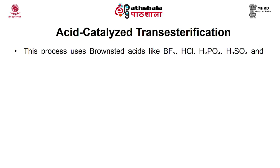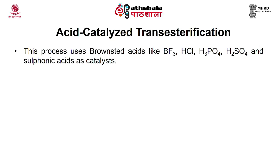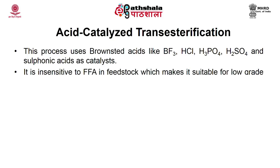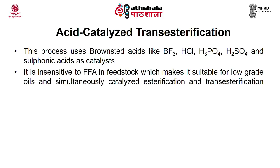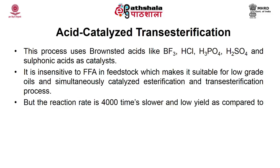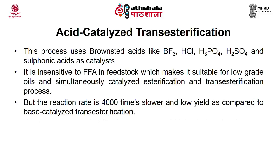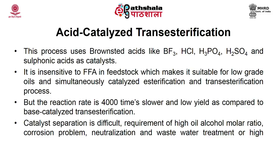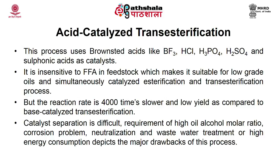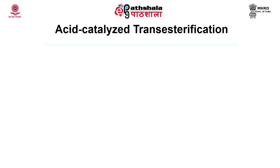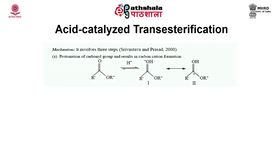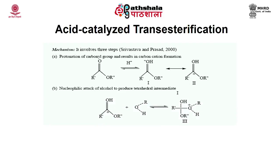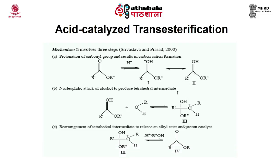Acid catalyzed transesterification uses acids like HCl, H₂SO₄, sulfonic acids, and phosphoric acids. It is insensitive to free fatty acids in the feedstock, making it suitable for low-grade oils and can simultaneously catalyze esterification and transesterification. However, the reaction rate is 4000 times slower and yields are lower compared to base catalyzed transesterification. Other drawbacks include difficulty in catalyst separation, requirement of high oil-to-alcohol molar ratio, corrosion problems, and high energy consumption.